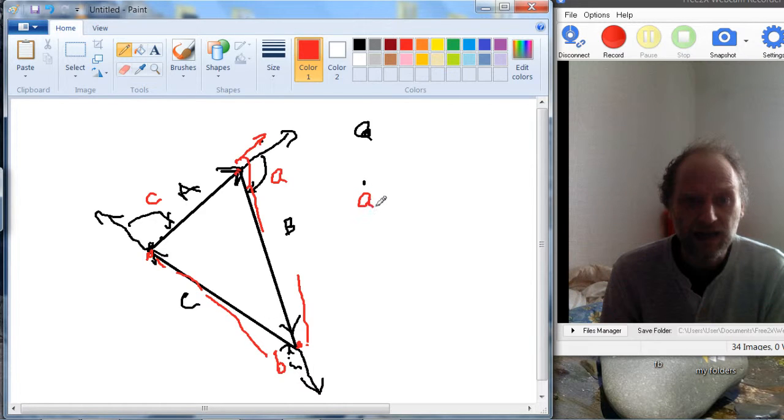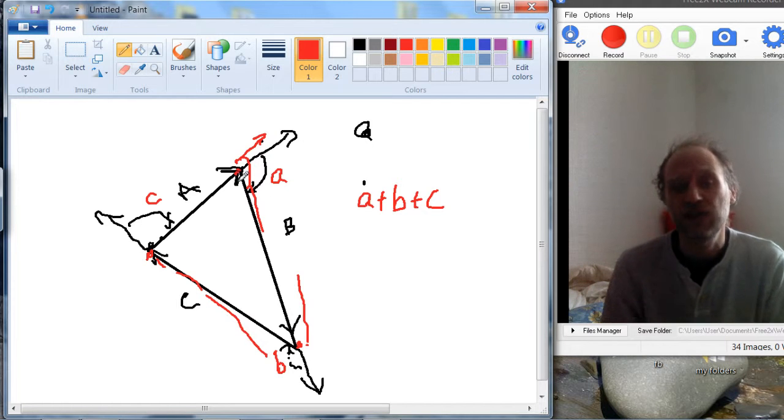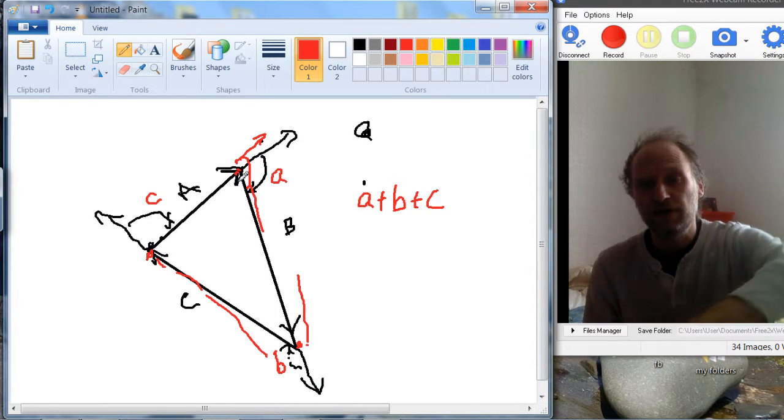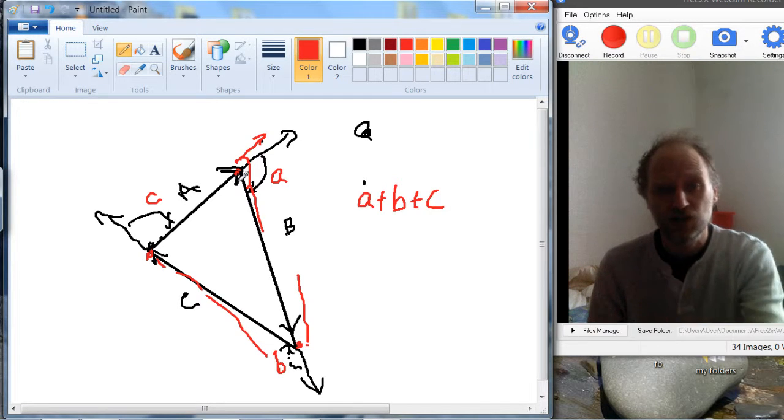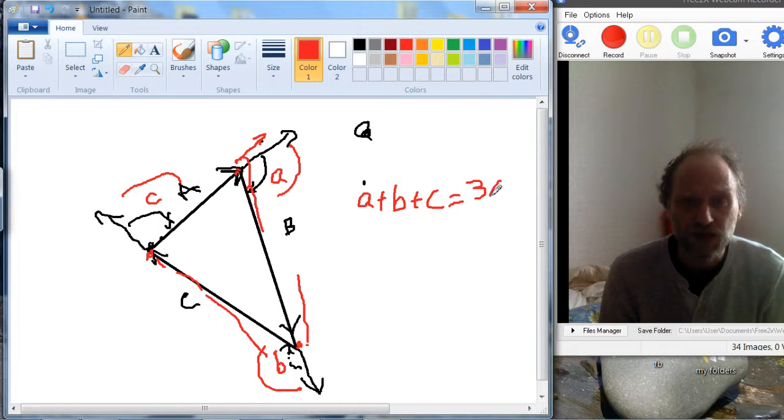So, A plus B plus C, in this diagram we can see that we actually get all the way back to the angle that we were. If we start at this angle and then we go all the way around and we get back to this angle, we've actually turned a full circle. So adding these three together is a full circle, and from our definition it's 360 degrees.